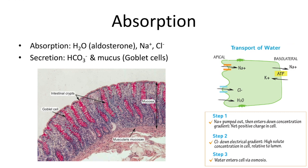Bicarbonate secretion into the lumen neutralizes acids from fermentation. Then, mucus is secreted by goblet cells in the colonic epithelium. It lubricates the lumen, protects the epithelium, and helps binding dehydrated substances from the feces. Here we can see the goblet cells in a histological section.